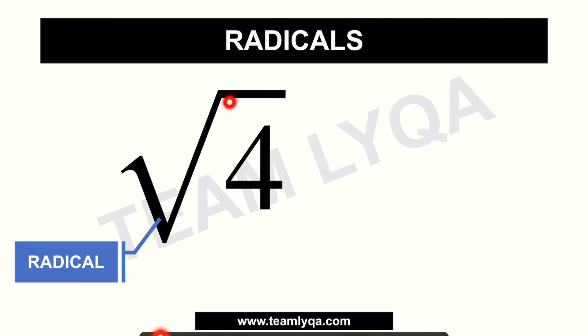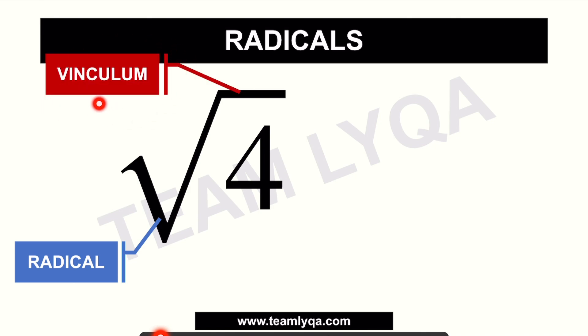Now, yung line dito sa taas — the line on top, which also gives us a clue as to what numbers go under that radical — we call that the vinculum. It's important to note that the vinculum also dictates who is included under it. Kapag may katabi itong isang number na hindi kasama or hindi under dun sa vinculum, and you're answering an exam, ibig sabihin nun, that number — hindi mo siya kailangan i-square root kasi hindi siya pasok dito.